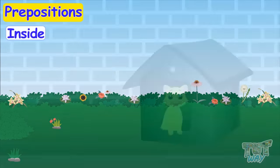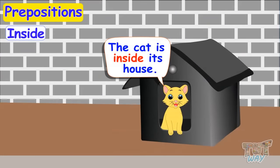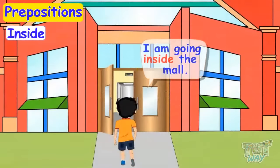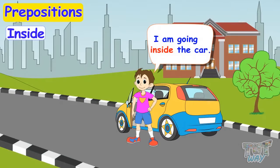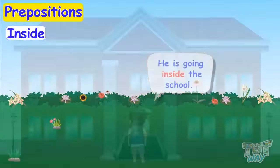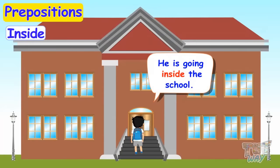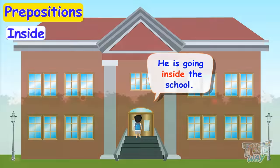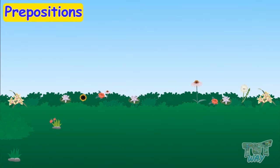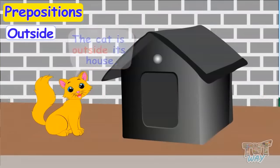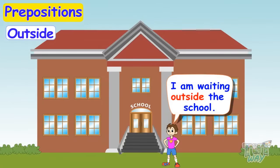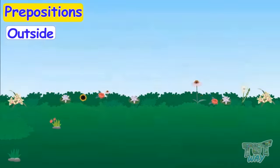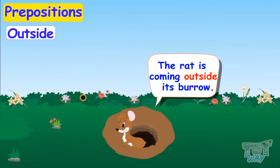Inside. The cat is inside its house. I am going inside the mall. I am going inside the car. He is going inside the school. Outside. The cat is outside its house. I am waiting outside the school. The rat is coming outside its burrow.